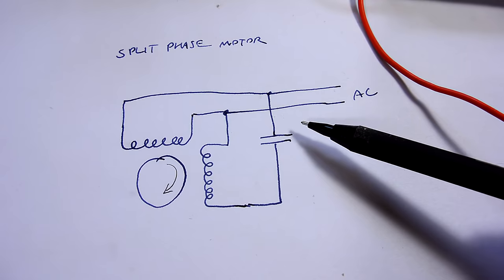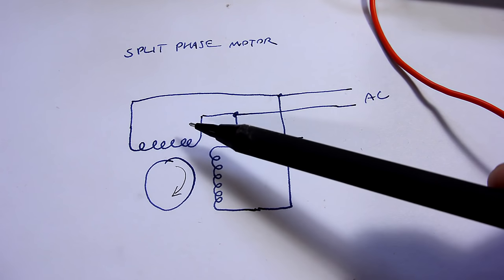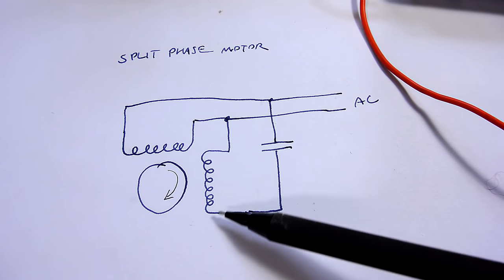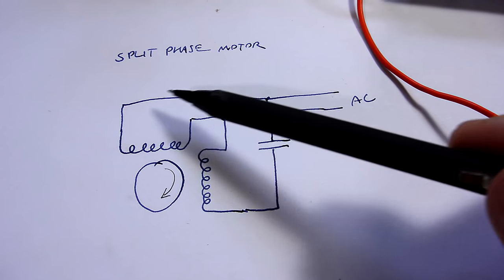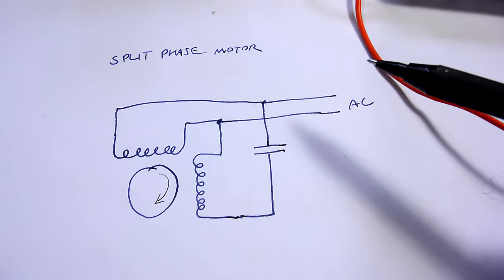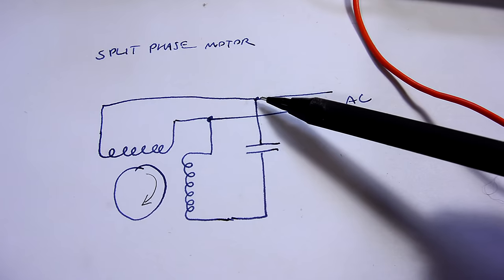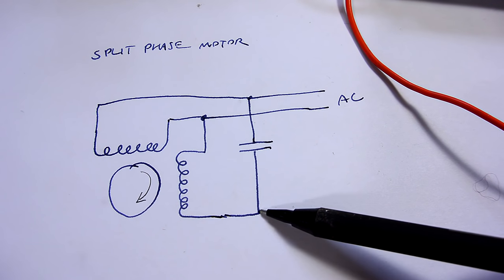Reversing this type of motor is trivially easy. All I have to do is move the AC from directly to this coil to directly to this coil and then through the capacitor the other winding is delayed. So essentially all I have to do is move the power connection from here to here.